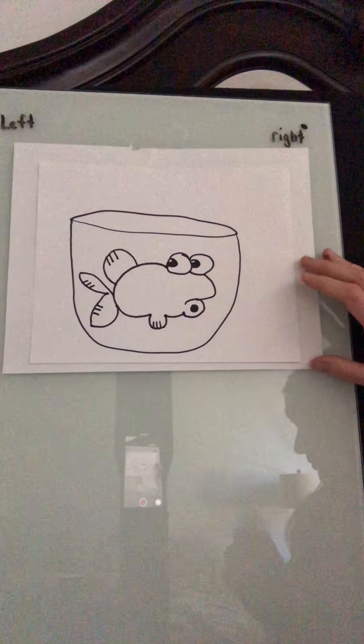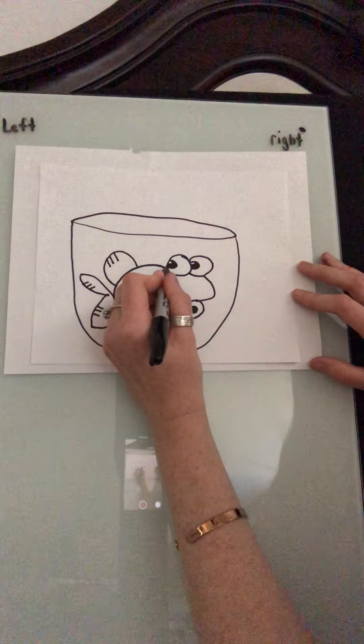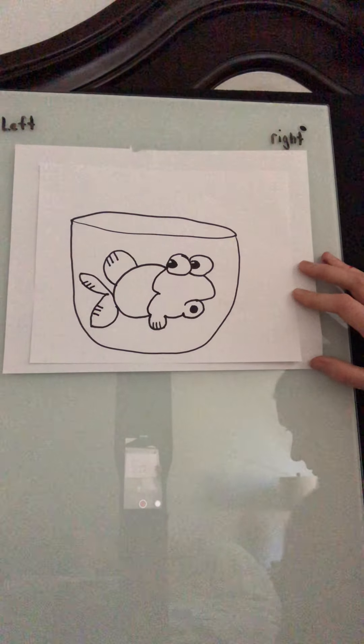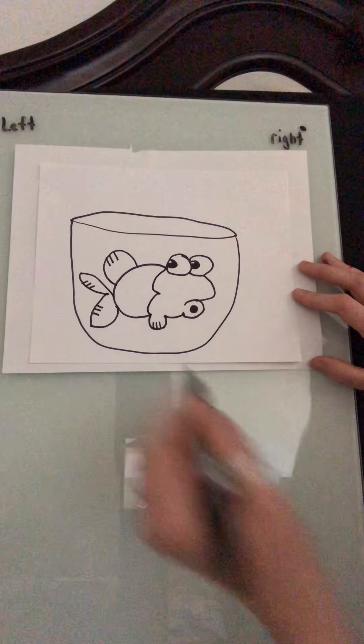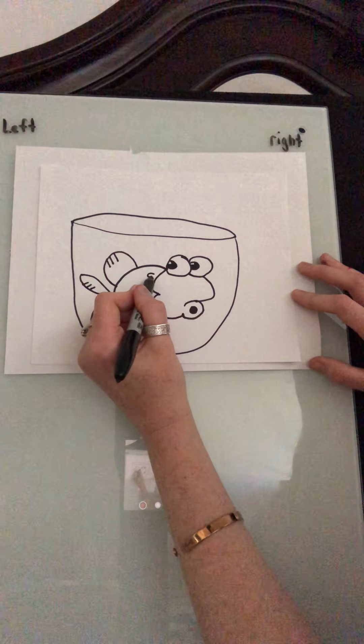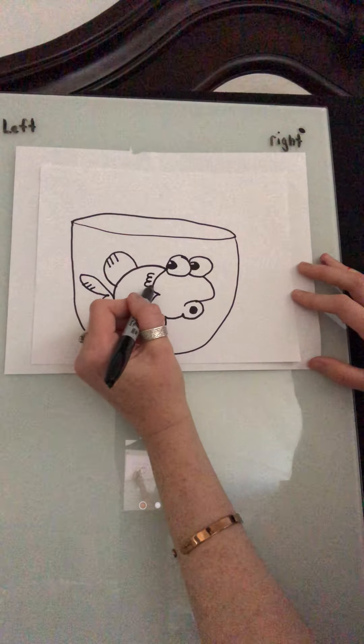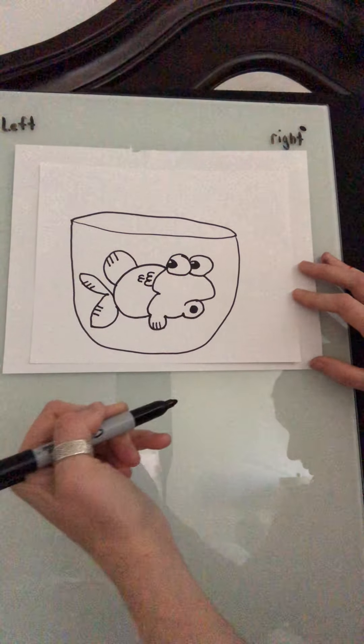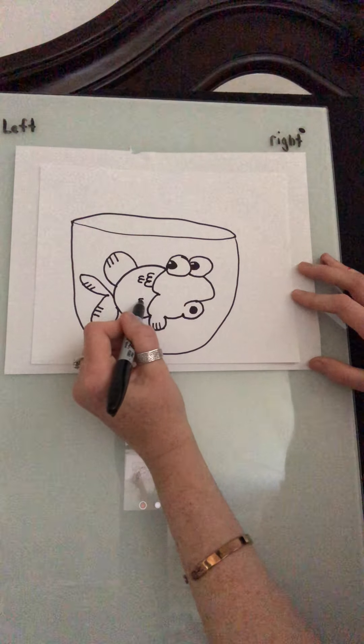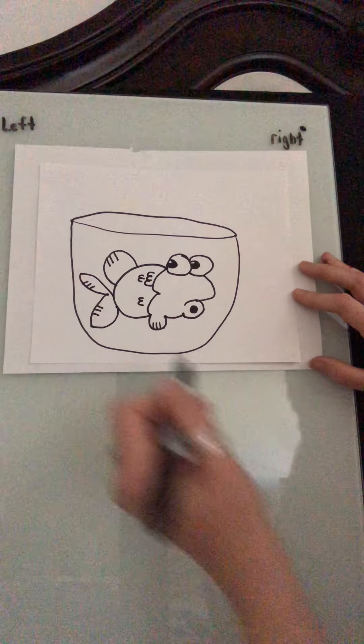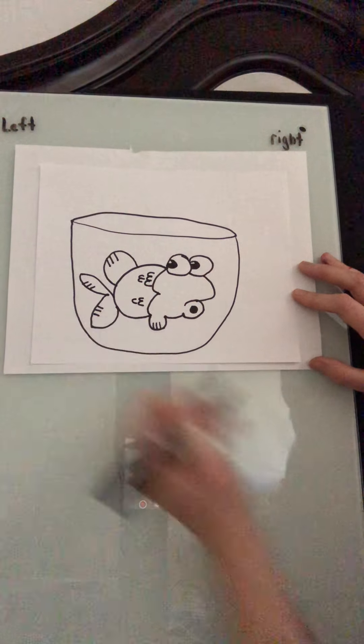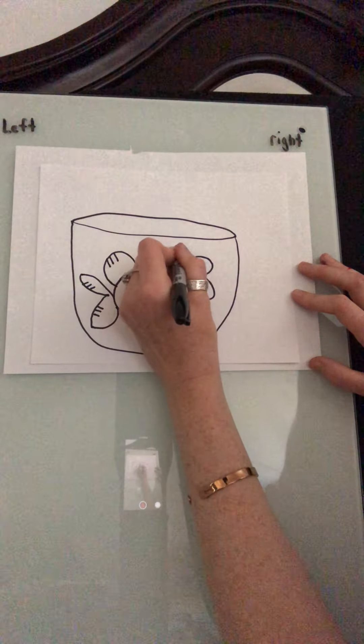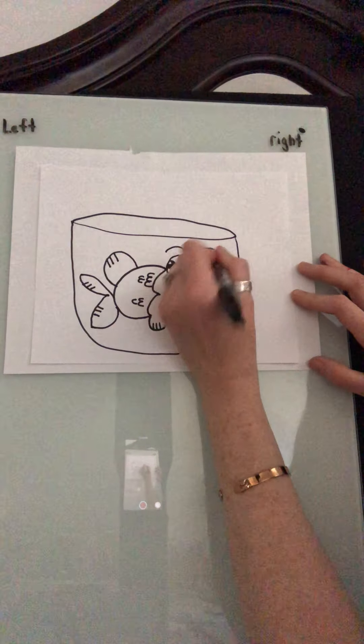Then we have from his eye, we do a C here, C to this fin. Then he did three C's here and two. A couple there, one there. Put some eyebrows on him.